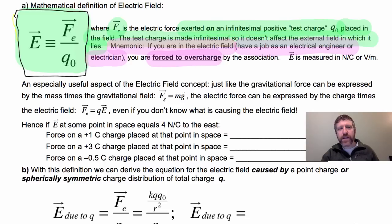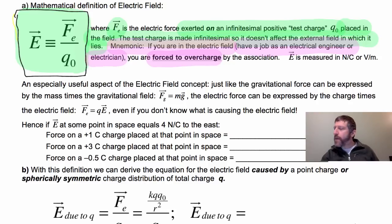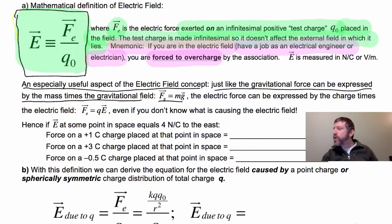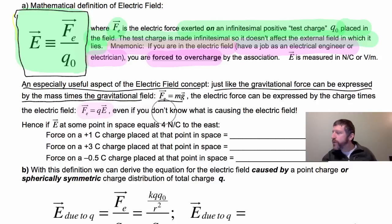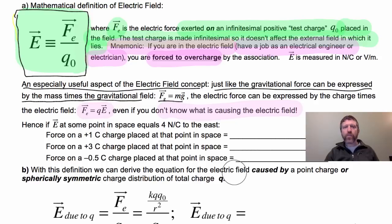The electric field is in newtons per coulomb — just like the gravitational field is in newtons per kilogram, the electric field is in newtons per coulomb placed in the field. Just like the gravitational force can be expressed as F_g = mg, you can express the electric force as F = qE, even if you don't know what's causing that electric field. If we know the electric field, we know how it's going to affect other charges.